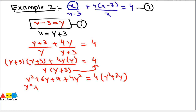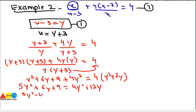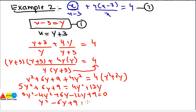Combining terms: 5y² + 6y + 9 = 4y² + 12y. Moving all terms to one side: 5y² - 4y² + 6y - 12y + 9 = 0, which gives y² - 6y + 9 = 0. We now have a quadratic equation with greatest power 2.